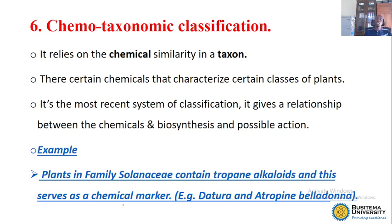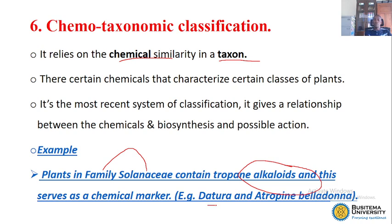The sixth way of classifying is the chemo-taxonomic classification. The chemo-taxonomic depends on the chemistry — mainly the chemical that it contains — and the taxonomy. So it is also restricted mainly to plants. For example, the family Solanaceae: depending on the taxonomy, you will have one family, which is Solanaceae, and it contains mainly alkaloids. Examples are Datura stramonium and Atropa belladonna — both are from the same family Solanaceae and both contain alkaloids, so you can classify them in one group using chemo-taxonomic classification.